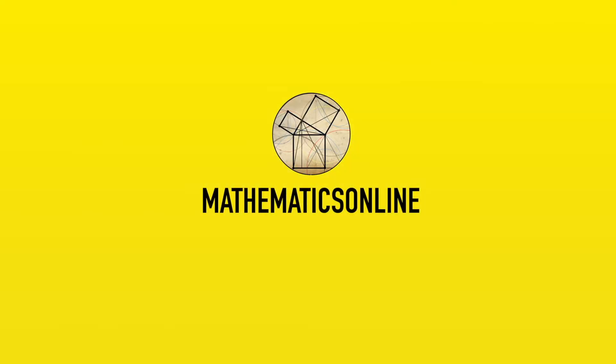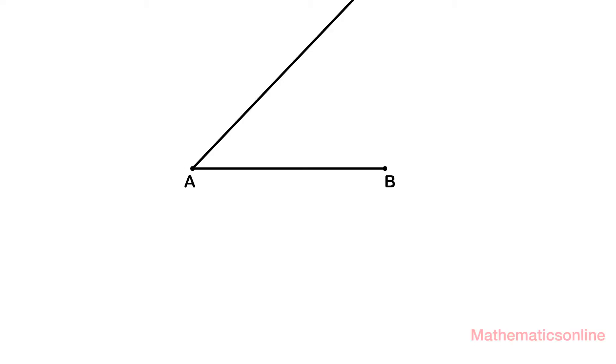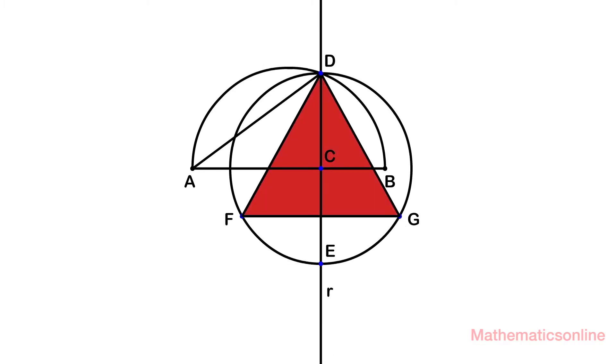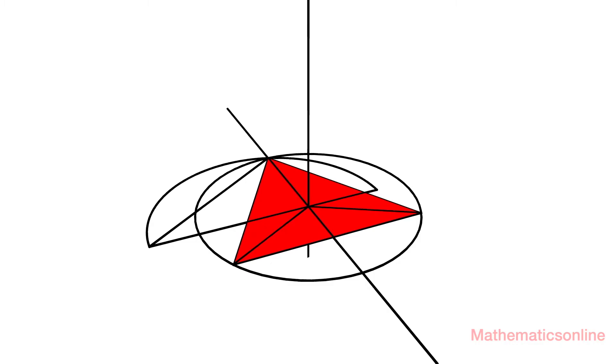Hello and welcome to Mathematics Online. So far, Euclid's construction has allowed us to create a tetrahedron and prove that it consists of four equilateral triangles.